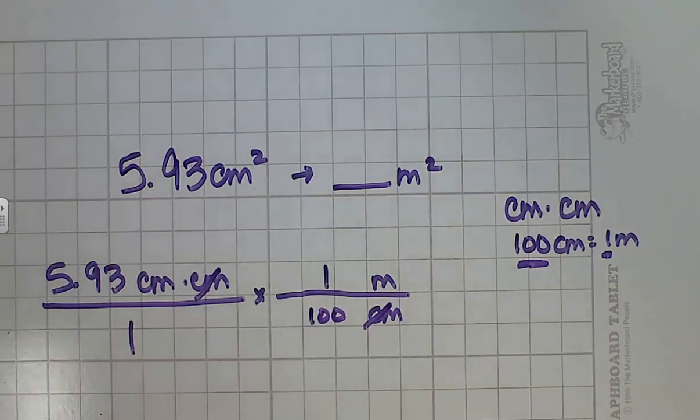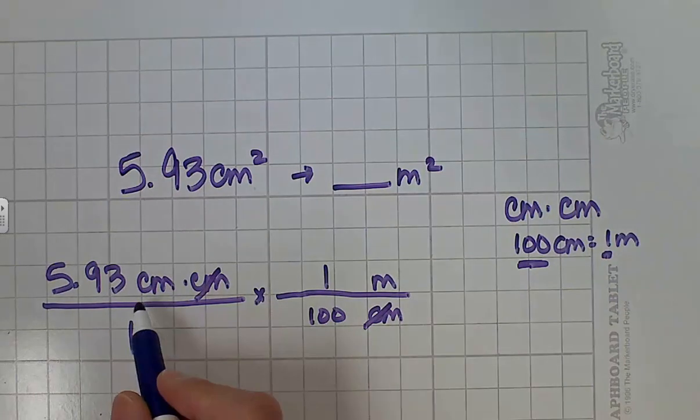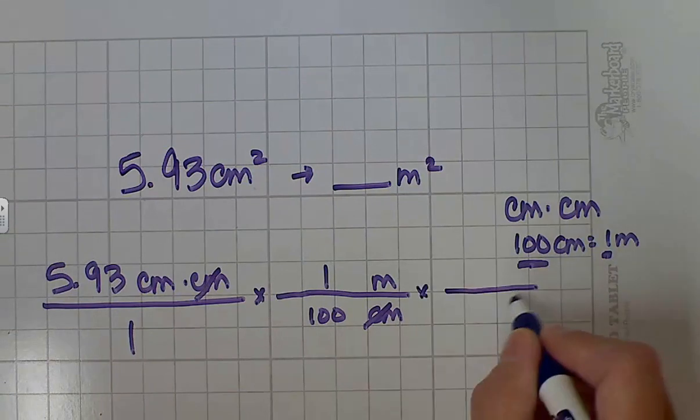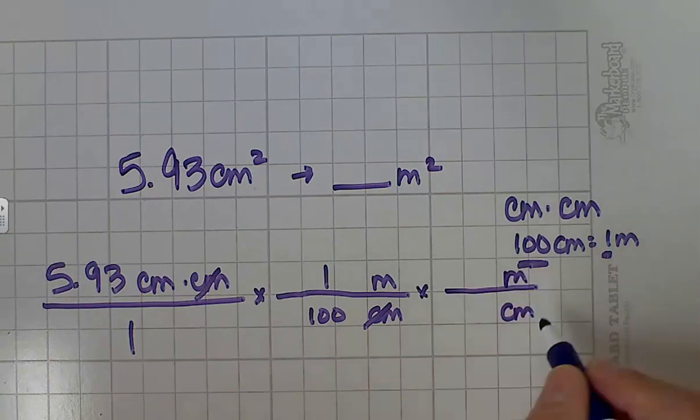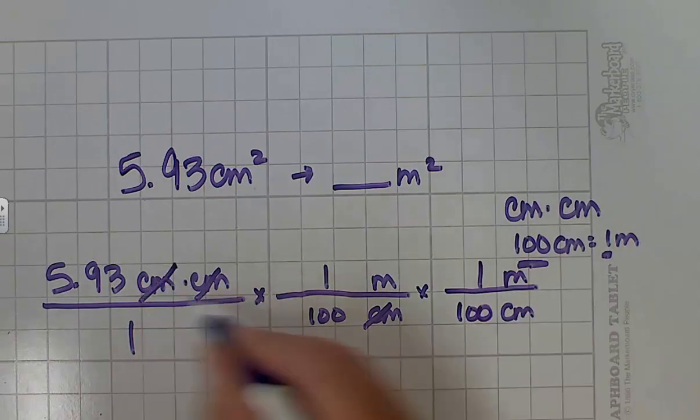Now if I stop there my units would be wrong. I would have meters times centimeters, and that's not what I want. I want meters times meters. So I have to do that exact same thing again. Centimeters in the denominator, meters in the numerator. 100 centimeters is one meter. My centimeters cancel out and I'm left with meters squared.